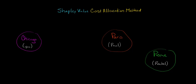In this video, we're going to talk about how to allocate a common cost to multiple users by using the Shapley Value Cost Allocation Method.